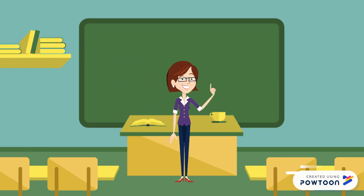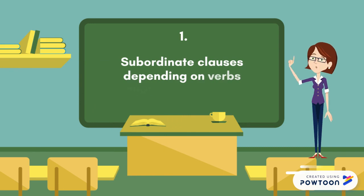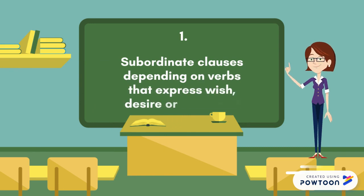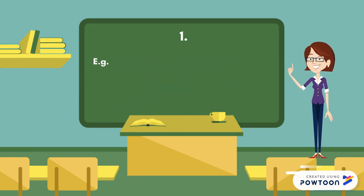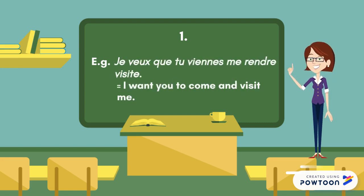Let's go into more detail. We use the subjunctive in subordinate clauses depending on verbs that express wish, desire, or command. For instance: 'je veux que tu viennes me rendre visite' — I want you to come and see me.